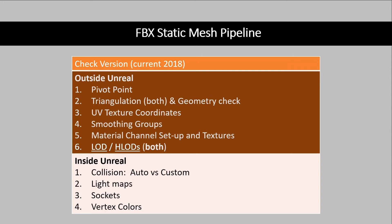Now let's talk about the FBX static mesh pipeline. The first line is a reminder to check and use the specific version compatible with Unreal. It's very important to use the tested and approved version, as some students in the past have forgotten and have gotten some strange problems. The two colorized chunks break the properties set up for the FBX static mesh into components that are usually done outside of Unreal and inside of Unreal. These steps can often be accomplished in various and flexible ways, and many of them can overlap between outside and inside of Unreal.